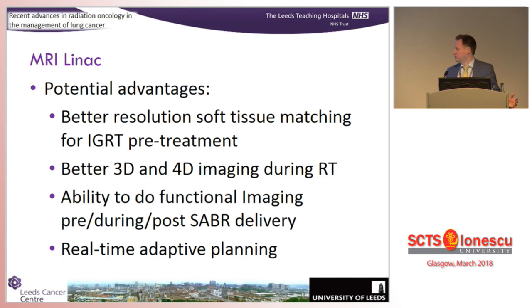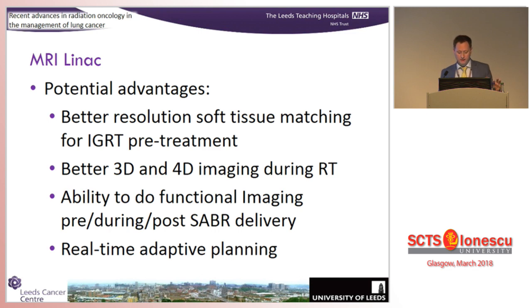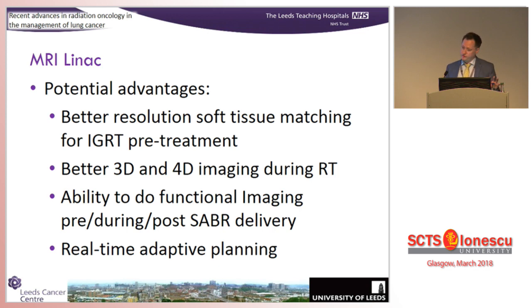MRI is better for soft tissue matching and has better resolution. We can get better 3D and 4D imaging during the radiotherapy, acquiring images as treatment is delivered to make sure the patient is still in the same place, or to gate it. But the next step is functional imaging - we can do functional imaging before treatment and see areas of hypoxia. Tumour hypoxia means it's more radio-resistant, so you could target the dose there. Or you can see what's happening during and after the radiotherapy and adapt your plan, moving towards real-time adapted planning.